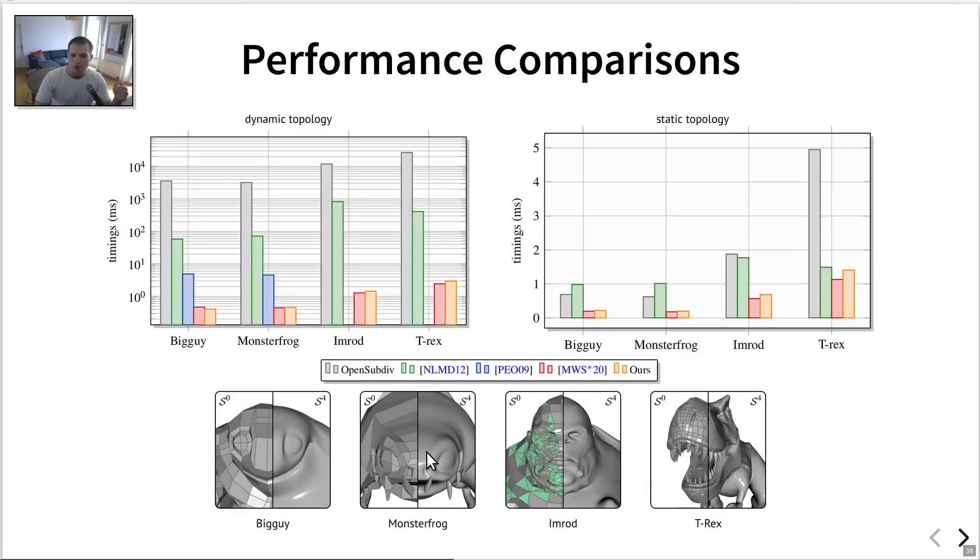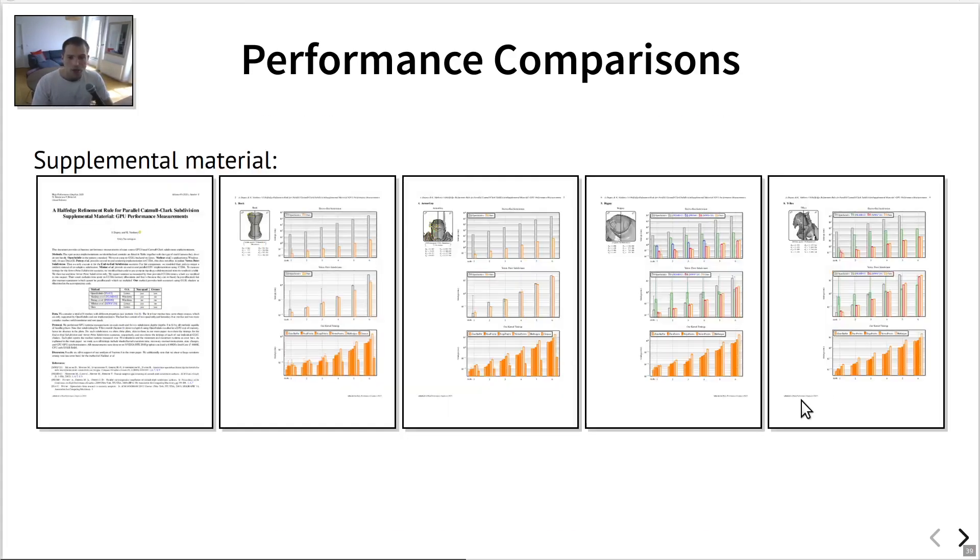So for this batch of tests, we don't have semi-sharp creases actually, but we do have non-quad faces and boundaries. So in this particular configuration, we tested against OpenSubdiv, the method of Niesner, which is what OpenSubdiv builds upon, the method of Patney and colleagues, which only supports quads. So you only have these two bars here and the method of Mlakar and colleagues, which is a very recent paper that was introduced a couple of months ago at Eurographics. And it does pretty much the same thing as ours. Actually, in practice, it outperforms us slightly most of the time. The difference between their approach and ours is that they rely on a more sophisticated mesh structure, so specifically a sparse mesh matrix representation. So, I mean, it's essentially an alternative approach to ours, and it's up to the developers to choose which data structure best suits their needs.